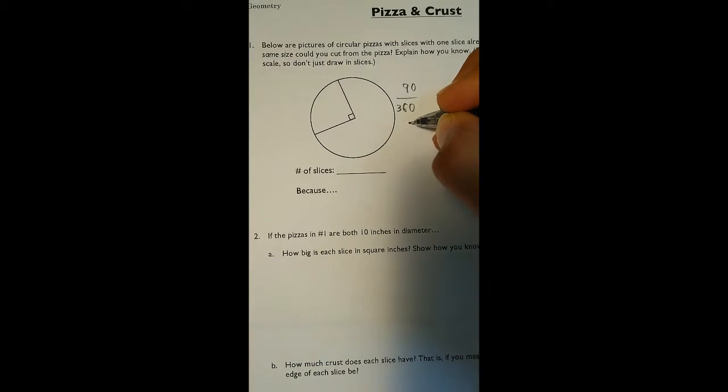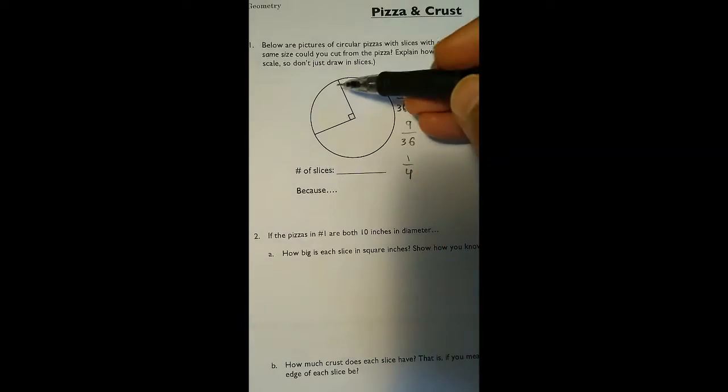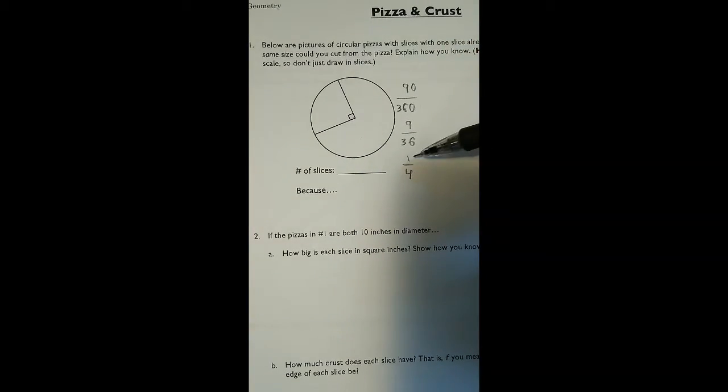Right, the zeros cancel each other out. So it goes to 9 over 36. Now 9 goes into itself once, 9 goes into 36 four times. So this one slice is one fourth of the pizza.